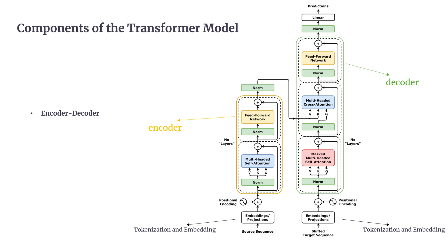For the decoder: the decoder is responsible for generating the output sequence based on what the encoder has learned. Like the encoder, it consists of several identical layers, each with masked multi-head self-attention. This ensures that the model doesn't cheat by looking ahead at tokens during training — it can only attend to earlier tokens in the sequence. There is also a cross-attention layer, which lets the decoder focus on the relevant parts of the encoder's output when producing each output token. Similar to the encoder, the decoder also processes output through a feed-forward neural network.